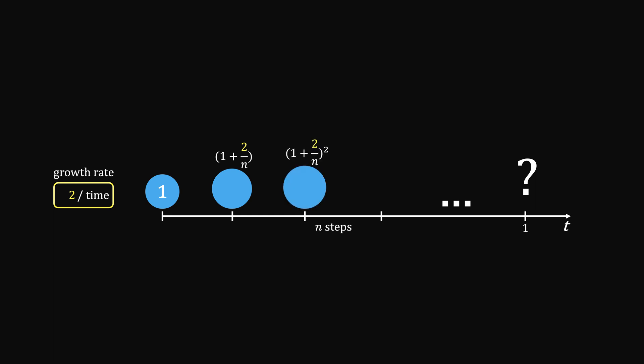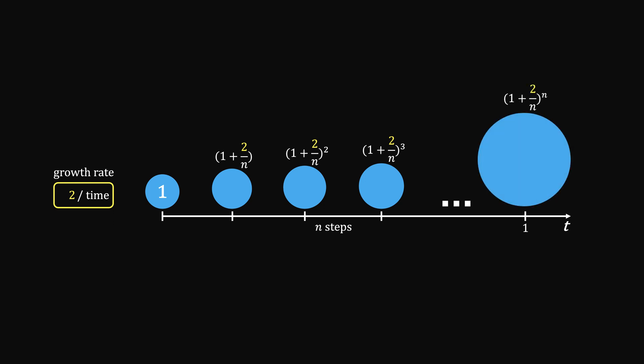Another 1 plus 2 over n, so on, until n times. So now the question is, what happens when n goes to infinity?